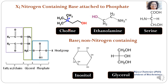The nitrogen-containing bases include choline, ethanolamine, and serine. In choline, you can see a nitrogen group to which are attached three methyl groups and one hydroxy group. The second nitrogen-containing base is ethanolamine, which has a nitrogen-containing group and a hydroxy-containing group — both are present in choline and ethanolamine. The third one is serine, which is an amino acid, and you can see an amine group, a carboxyl group, and a hydroxy group.